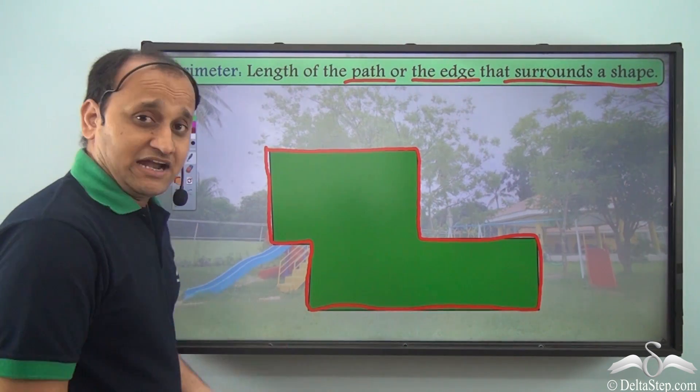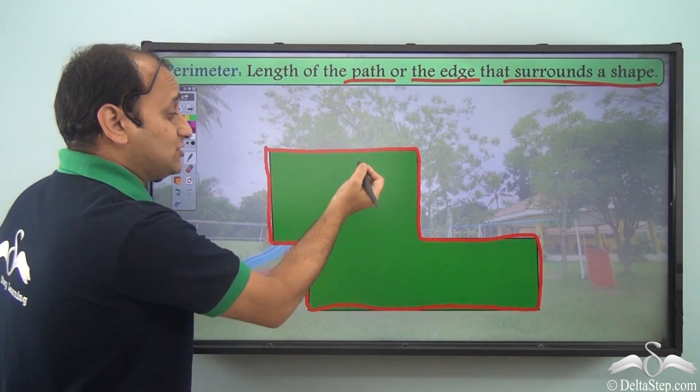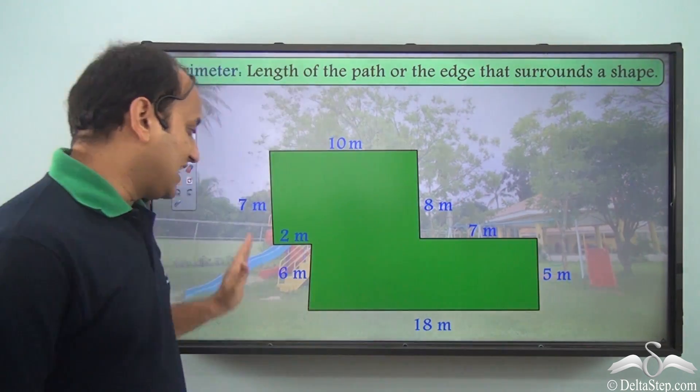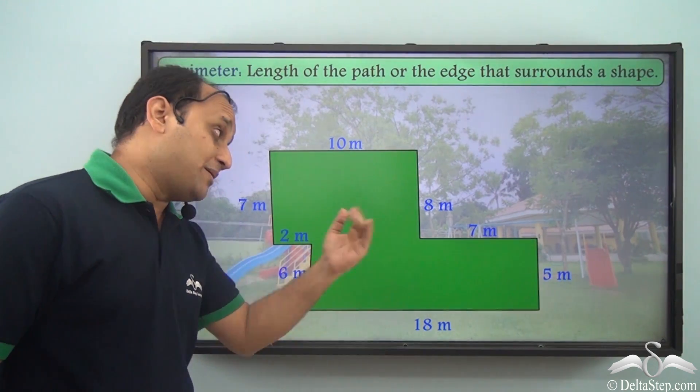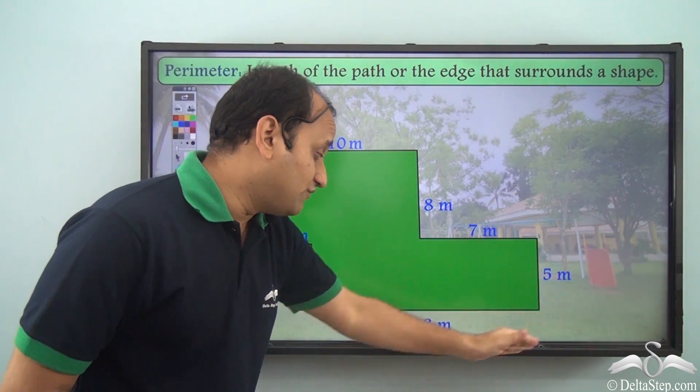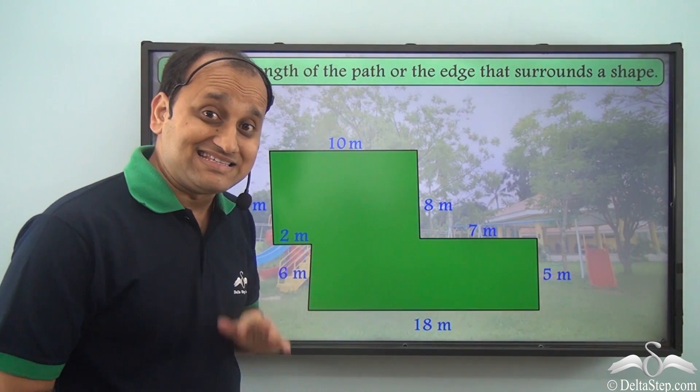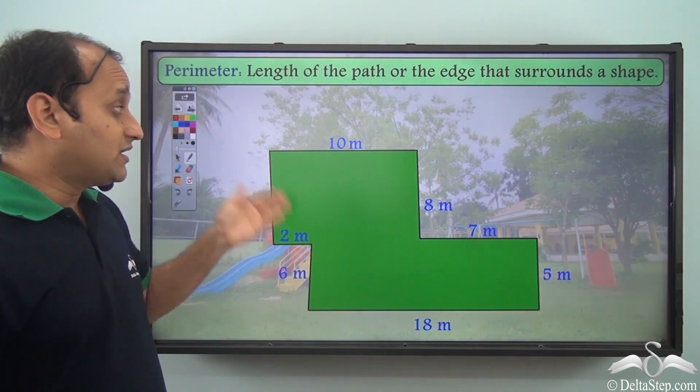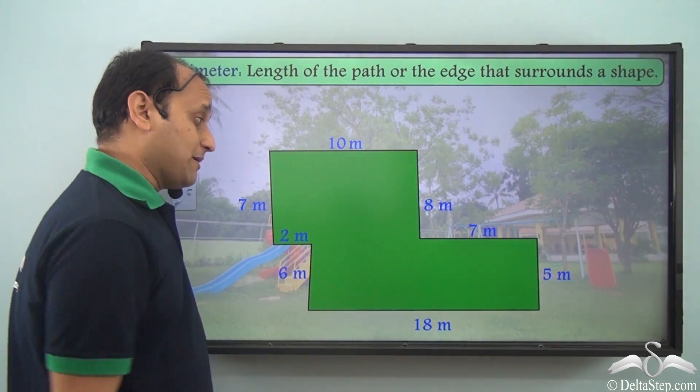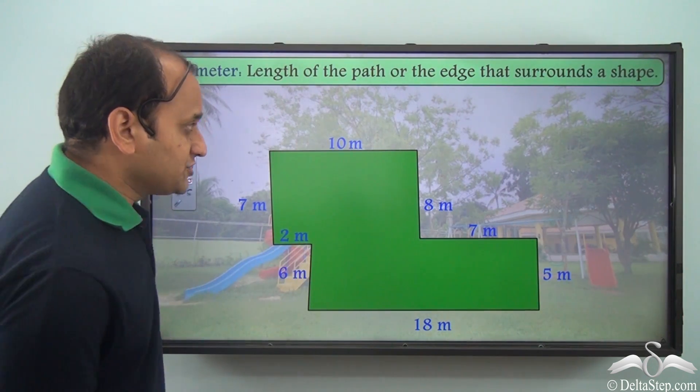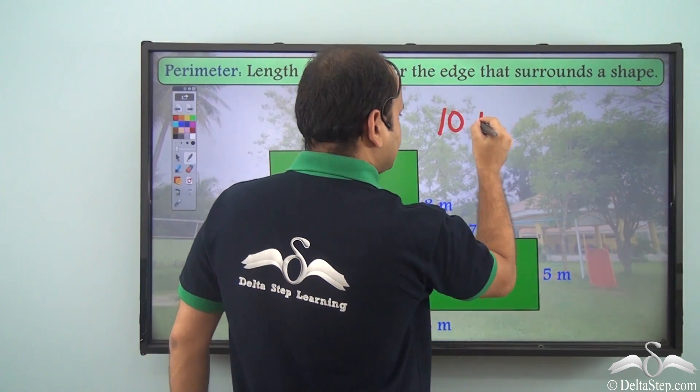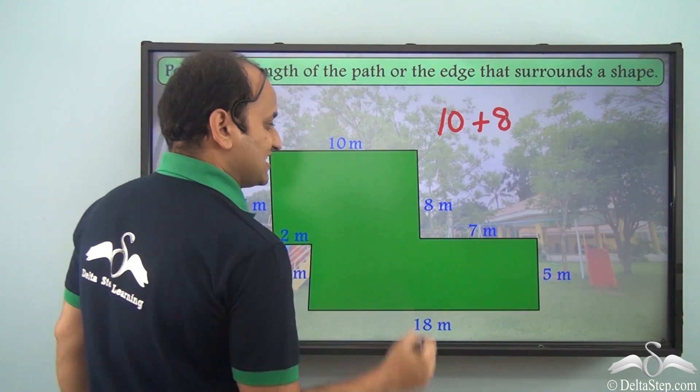So in this case, Ravi and his friends calculated the length of each side and these are the calculations that they came up with. Now what is the perimeter of this shape? What do you think? Well, the perimeter will be nothing but you will have to add all these sides because perimeter is the total length of the sides which are surrounding this shape. So we have 10 meters. So I have 10. Then we have 8 meters.